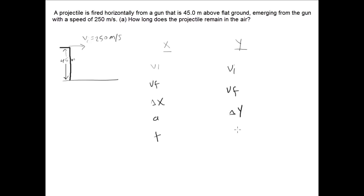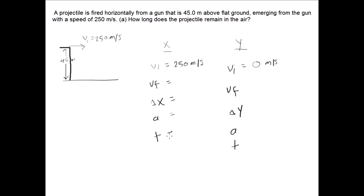We can do that for both the x and the y direction. You'll notice I'm doing a delta y for the displacement in the y direction. So let's write down what we know. The question gave us that the initial speed in the x direction was 250 meters per second. For projectile motion, there is no acceleration in the x direction, and since there's no acceleration, the object's speed will not change with time, so its final speed will also be 250 meters per second. As of now, we don't know delta x and we also don't know the time of flight.